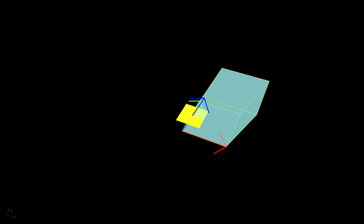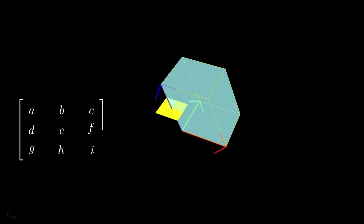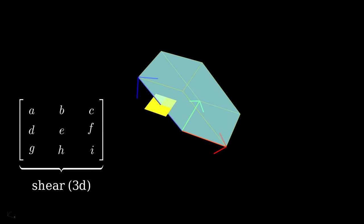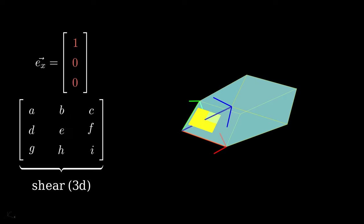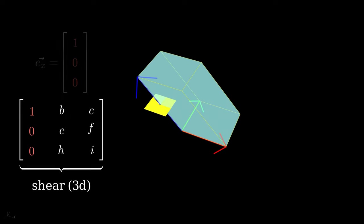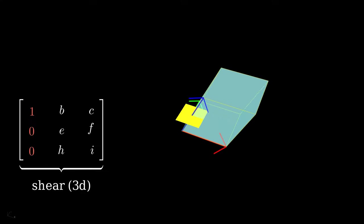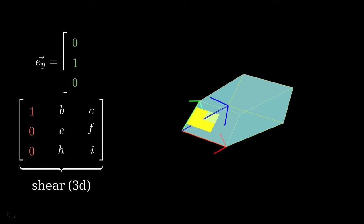We can notice when the cube is shearing, the X axis doesn't change. Therefore the first column of 3x3 matrix doesn't change. It's the same as the X basis vector. So does the Y axis. Therefore the second column is the same as the Y basis vector.